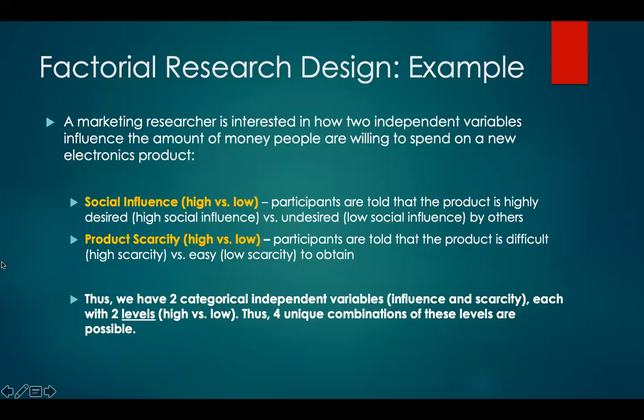Here's a research design example. A marketing researcher is interested in how two independent variables influence the amount of money people are willing to spend on a new electronics product. The first independent variable is social influence — high versus low — where participants are told the product is either highly desired (high social influence) or undesired (low social influence). The second independent variable is product scarcity — again, high versus low — where participants are told the product is difficult (high scarcity) or easy (low scarcity) to obtain. Thus, we have two categorical independent variables, influence and scarcity, each with two levels, high versus low.